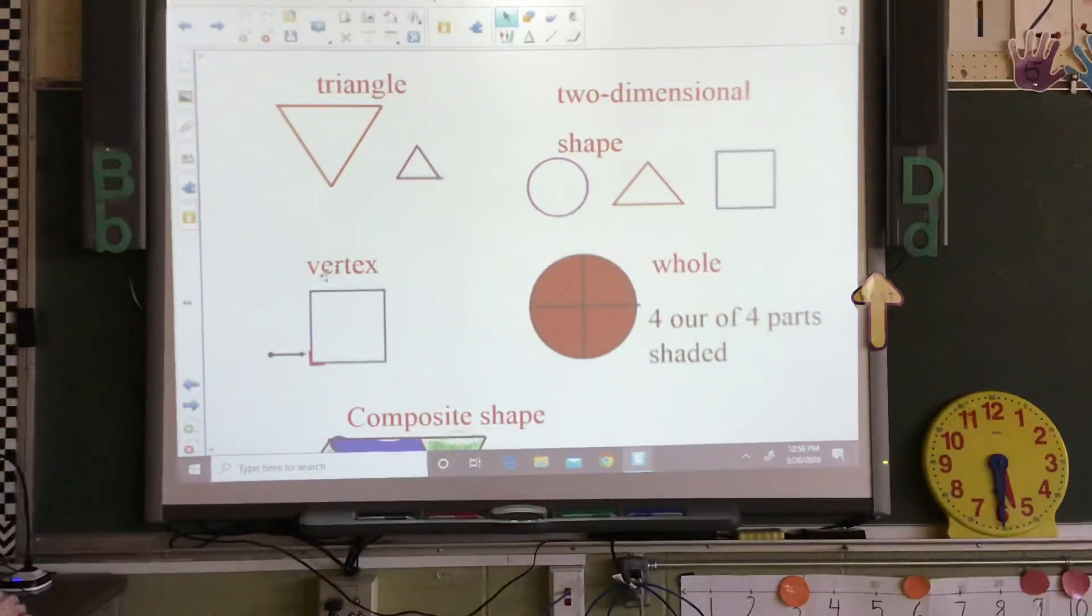Our next one is the vertex. So that's the corner. So it's more than one, it's called vertices. A point on a two dimensional shape where two or more sides meet. The plural of vertex is vertices.